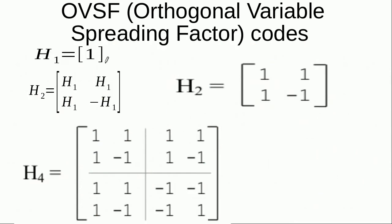Now we come to the question of how these spreading codes are generated. For example, we have the number one as the first spreading code, and since there is one chip in this code its spreading factor is one — meaning it is not spreading the signal at all. In order to increase the spreading factor we have to increase the length of this code, meaning we need more chips in this code.